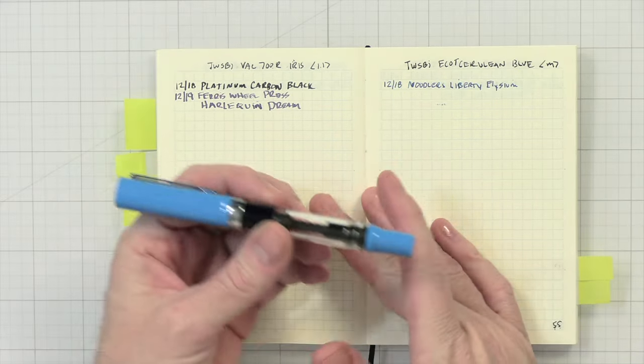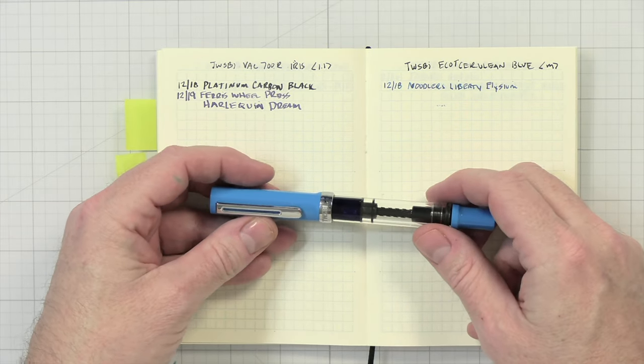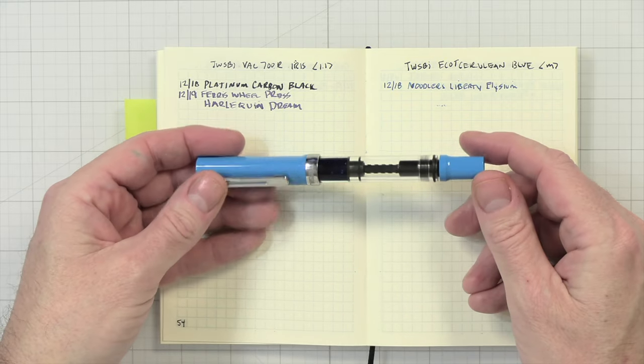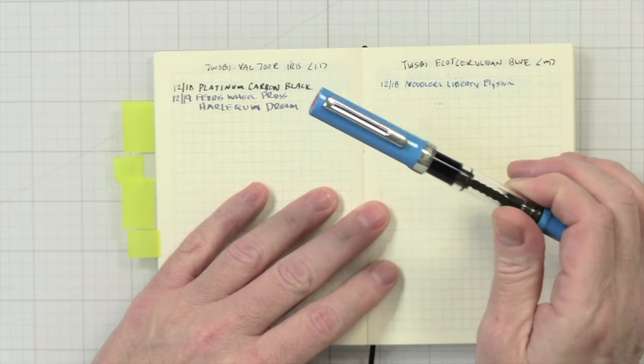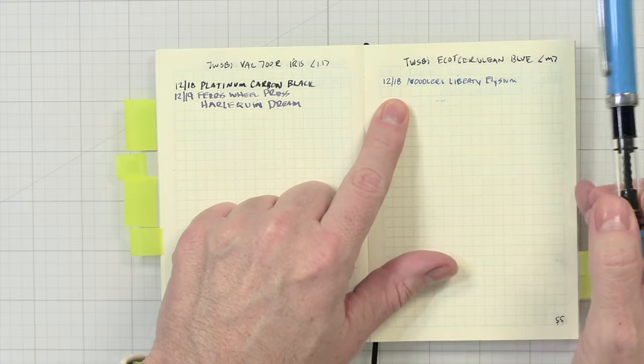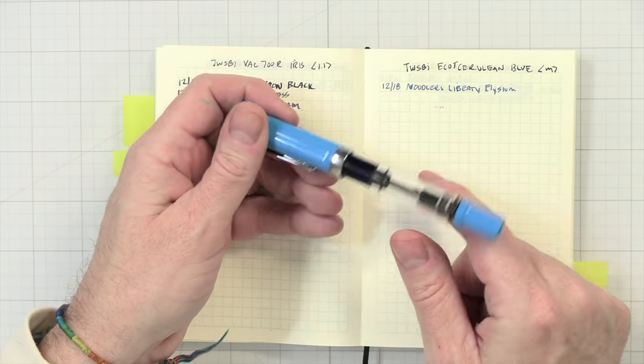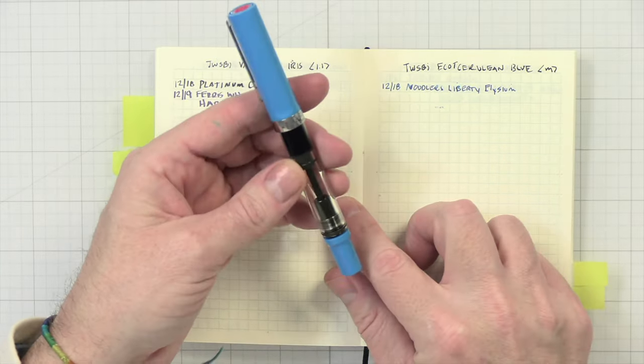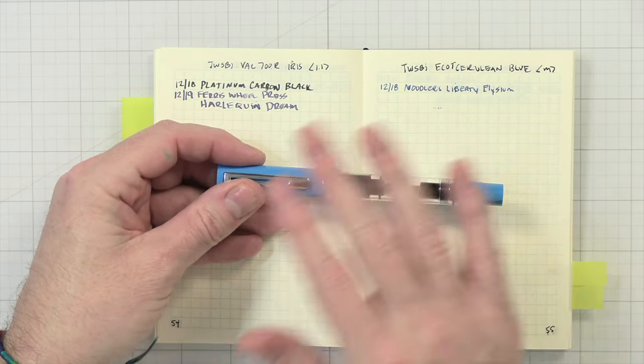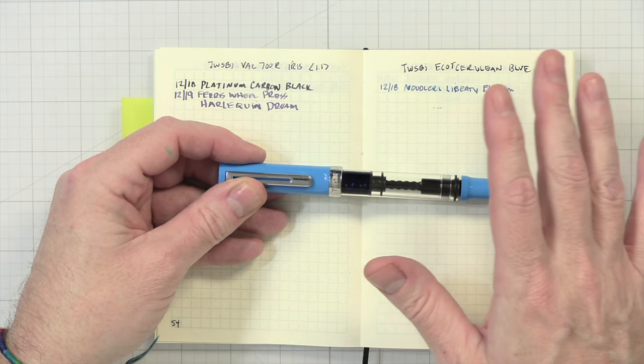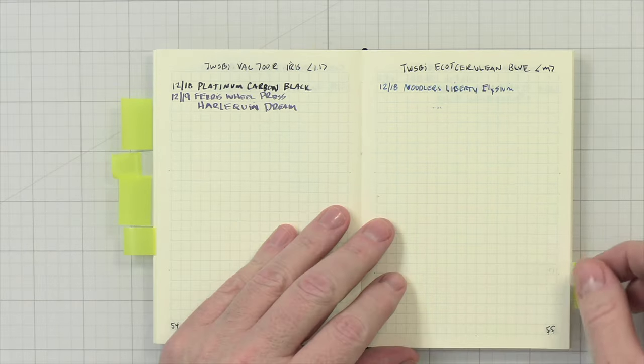Up next, we have my TWSBI Eco-T Cerulean Blue. This is what I keep my blue ink in, and the blue ink is Noodler's Liberty Elysium. I always keep the blue in this pen as well. These two pens are staples and I always keep them inked. I just inked this up last week. It does have a pretty big ink barrel in it, so it doesn't really get filled up a lot because I don't use blue as often. I do some rotations in my planner for ink colors, and you're going to see that when I show that to you at the end of the video.